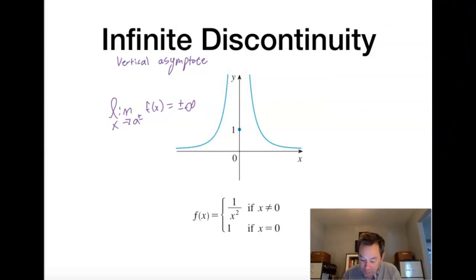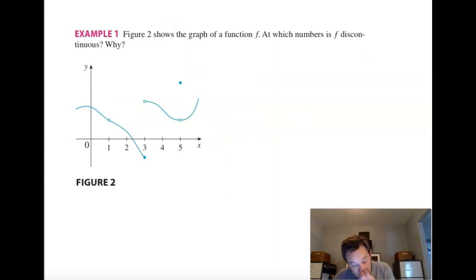Sometimes it's referred to also, I'll give you this one just so that you have all the vocab words. Sometimes it's called an essential discontinuity as well. So, this one's discontinuous at x equals 0 because x equals 0 is the vertical asymptote.